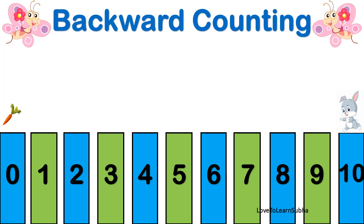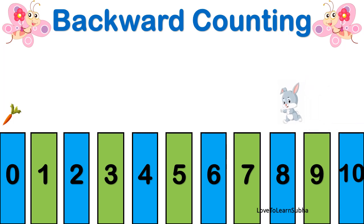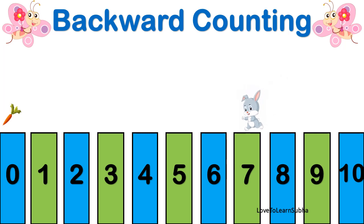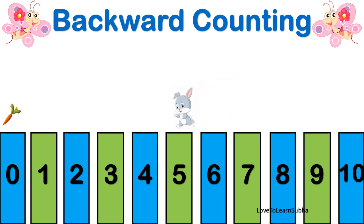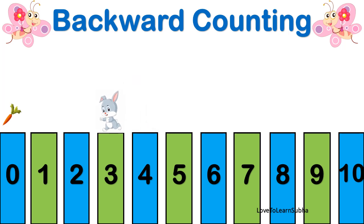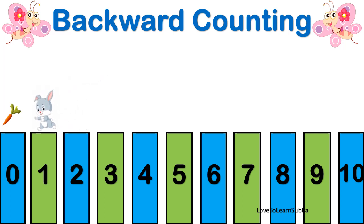Now let's start counting: 10, 9, 8, 7, 6, 5, 4, 3, 2, 1, 0. Now the bunny has reached his carrot by moving backward using backward counting.